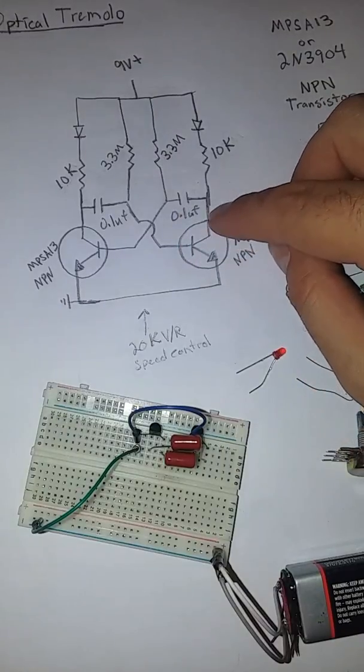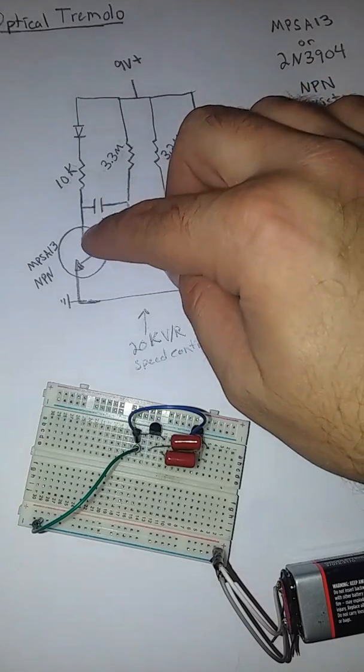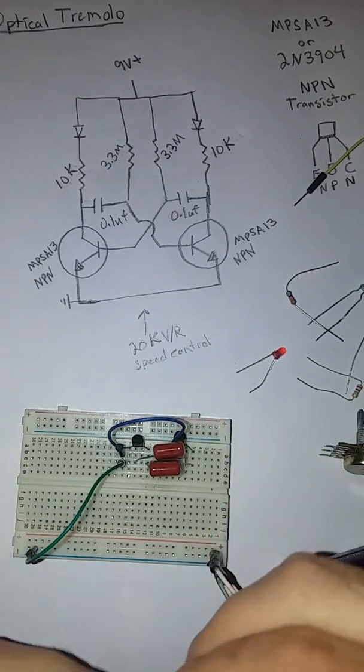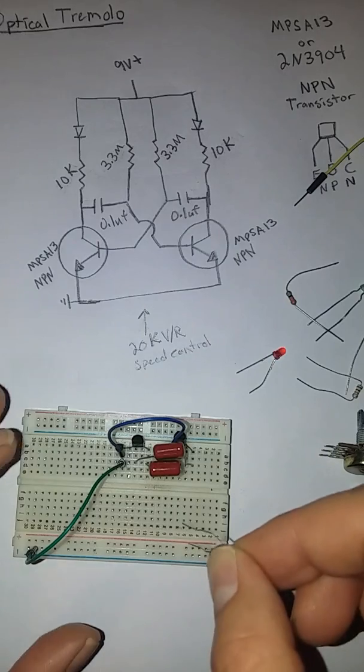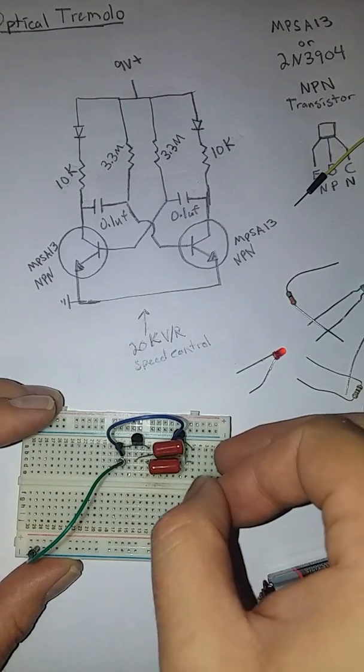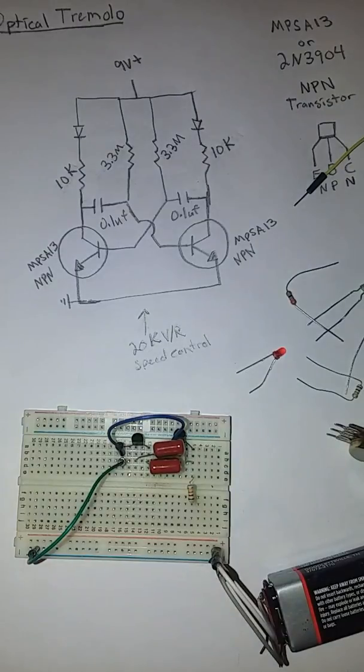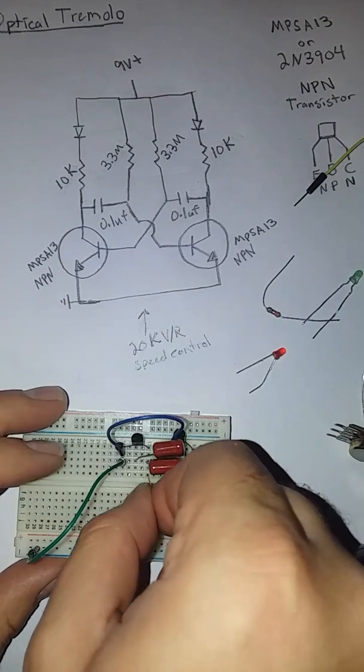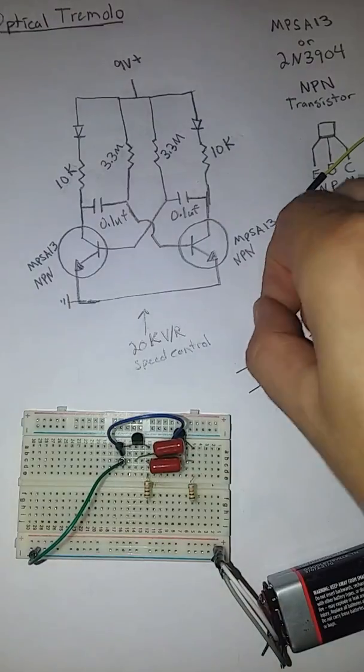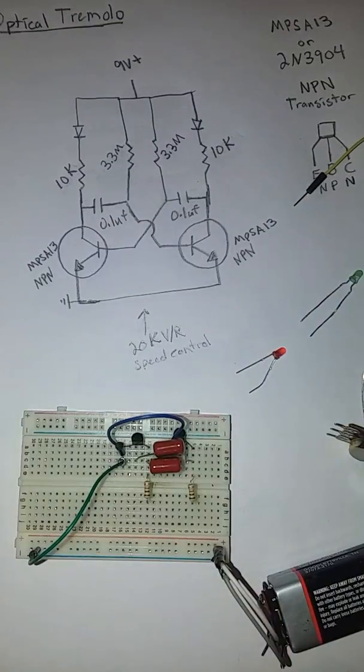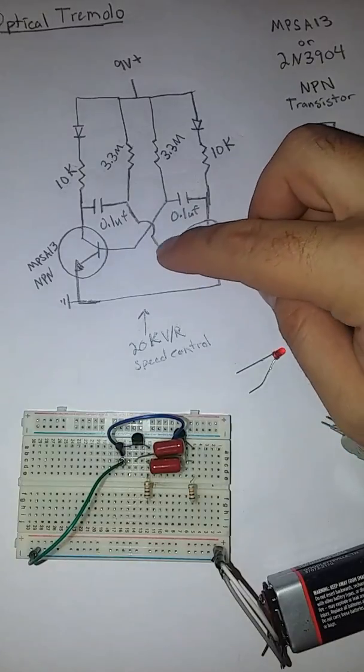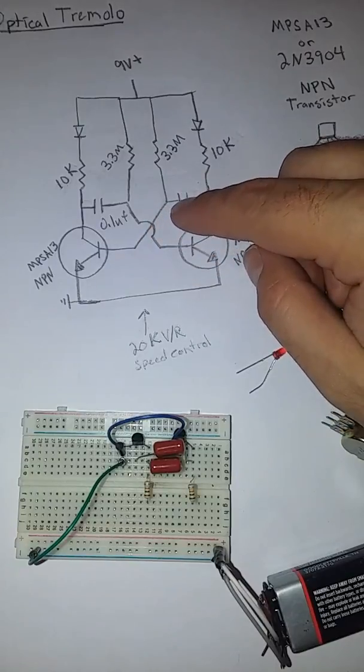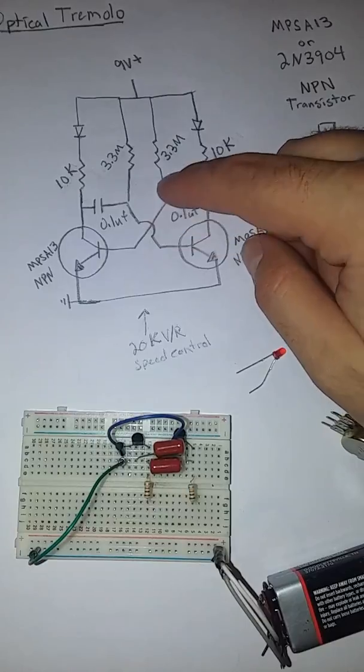Directly connected to the collector also is the 10k resistor on each side. Directly connected to the base. And it is directly connected. You'll see that it goes to this capacitor and to this resistor at the same time. We've got our 3.3M resistor.